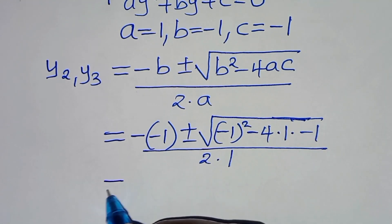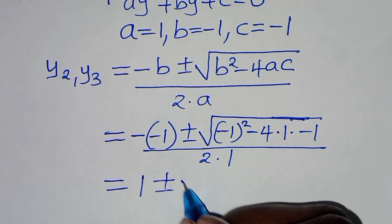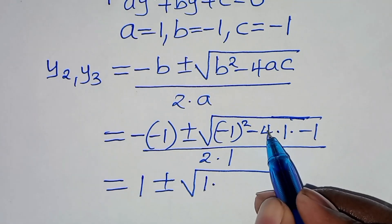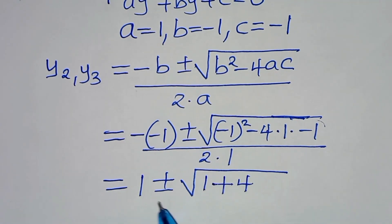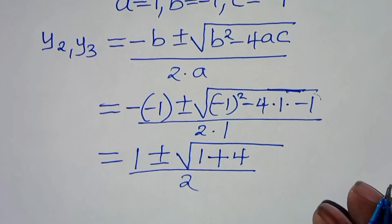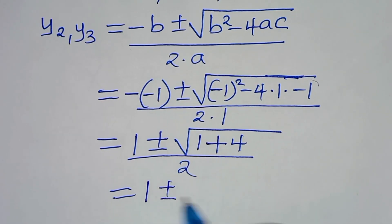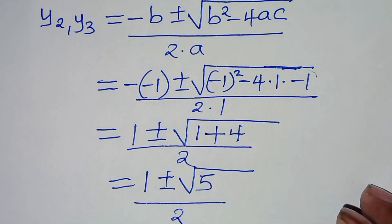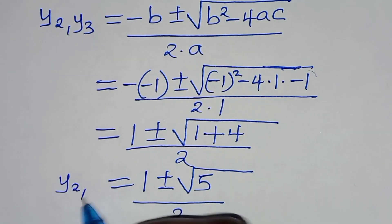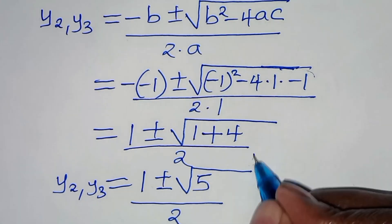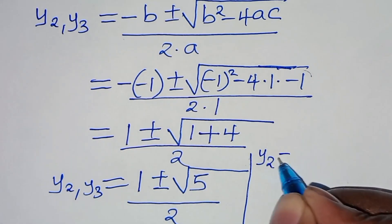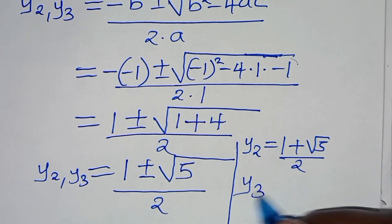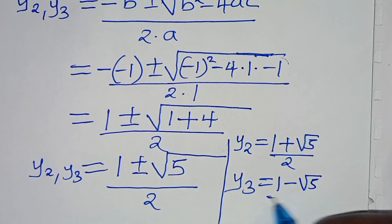So this gives us 1 plus or minus the square root of minus 1 squared, which is 1, minus 4 times minus 1, which is plus 4, over 2. So we have 1 plus or minus the square root of 5, over 2. Therefore y₂ equals 1 plus square root of 5 over 2, and y₃ equals 1 minus square root of 5 over 2.